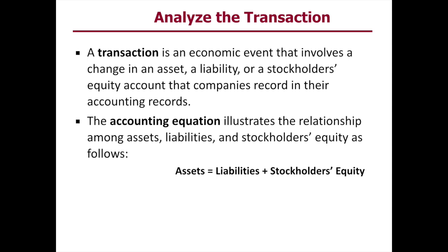The accounting equation demonstrates that creditors and owners have claims on the company's assets. It can be expanded for the stockholders' equity section to include contributed capital — which is your common stock and preferred stock — as well as retained earnings and accumulated other comprehensive income. That'll be discussed much later as we move along.